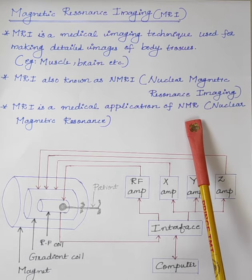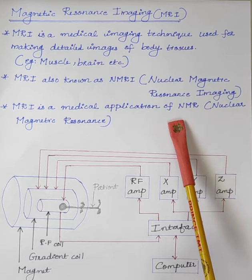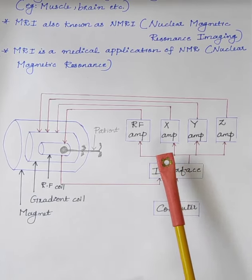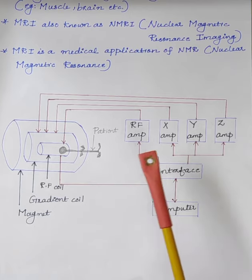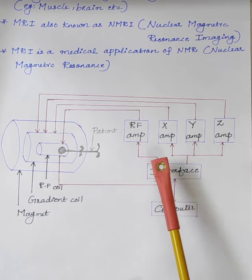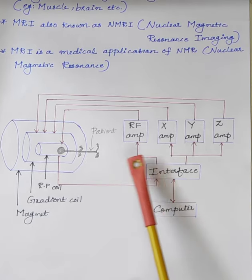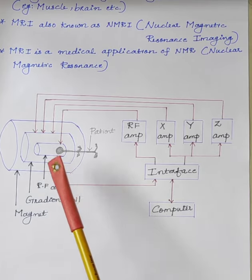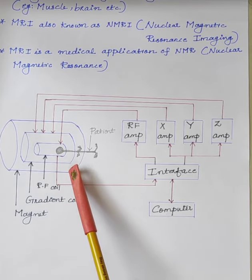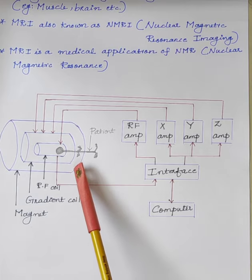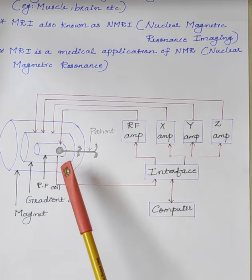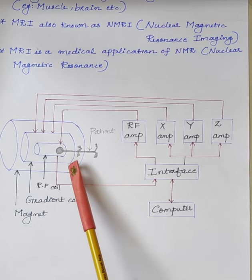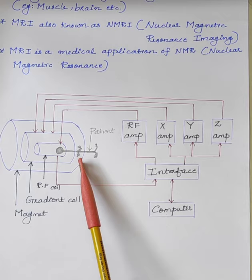Next we will discuss the principle of operation of MRI. Certain atomic nuclei are able to absorb and emit radiofrequency energy when placed in an external magnetic field. In clinical MRI, hydrogen atoms are commonly used because these atoms are naturally abundant in humans, particularly in water and fat.